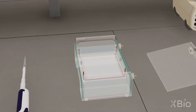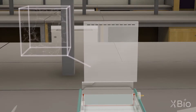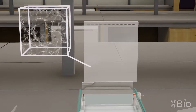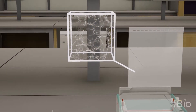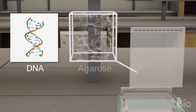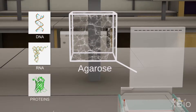Gel electrophoresis is one of the best and most widely used techniques for characterizing biomolecules. A gel is a porous molecular sieve and it can be used to separate mixtures of molecules and spread them out over a large area for visualization. For this segment, we're going to focus on separation of DNA with agarose gels, but bear in mind that other molecules like RNA and proteins can be separated with other types of gels.